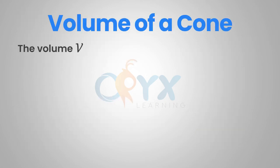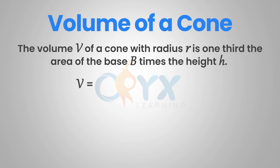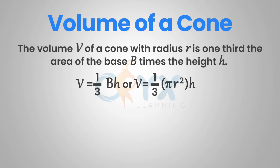The volume V of a cone with radius R is one-third the area of the base B times the height H. So our formula is V equals one-third BH, where B is the area of the base, or V equals one-third pi R squared H. Pi R squared is the area of a circle, and the base of a cone is a circle, so the area of the base is represented by pi R squared.